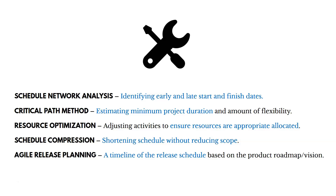Schedule compression shortens the schedule without reducing scope. If the schedule is taking longer than anticipated, you might add budget to bring in additional resources to compress it. For agile projects, you can use agile release planning — developing a timeline based on the product roadmap and vision, deciding whether you'll have sprints every two or four weeks.